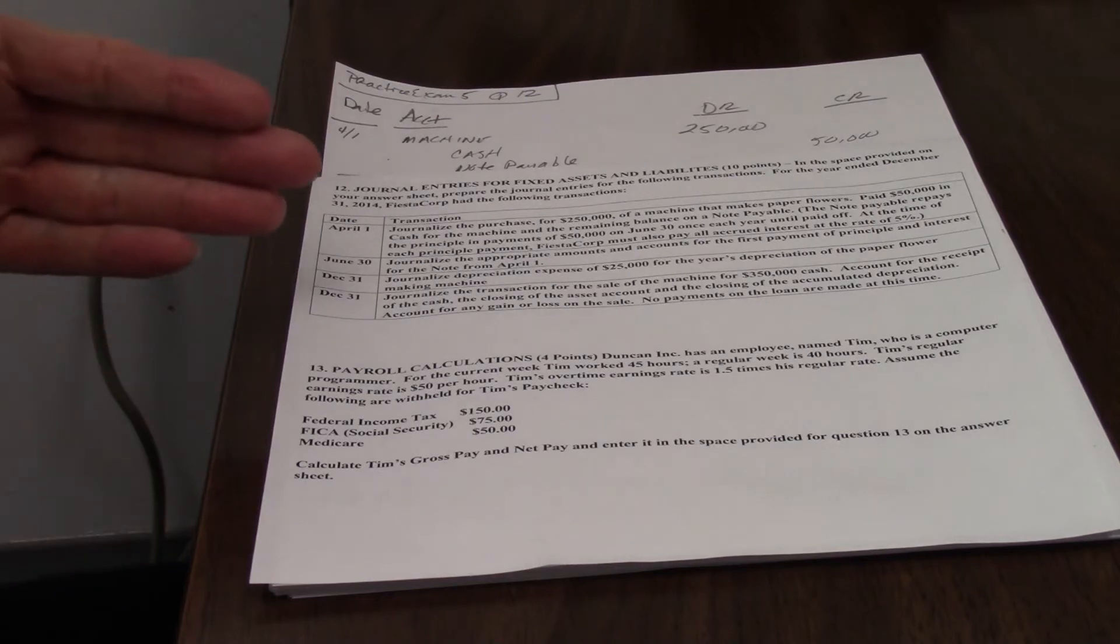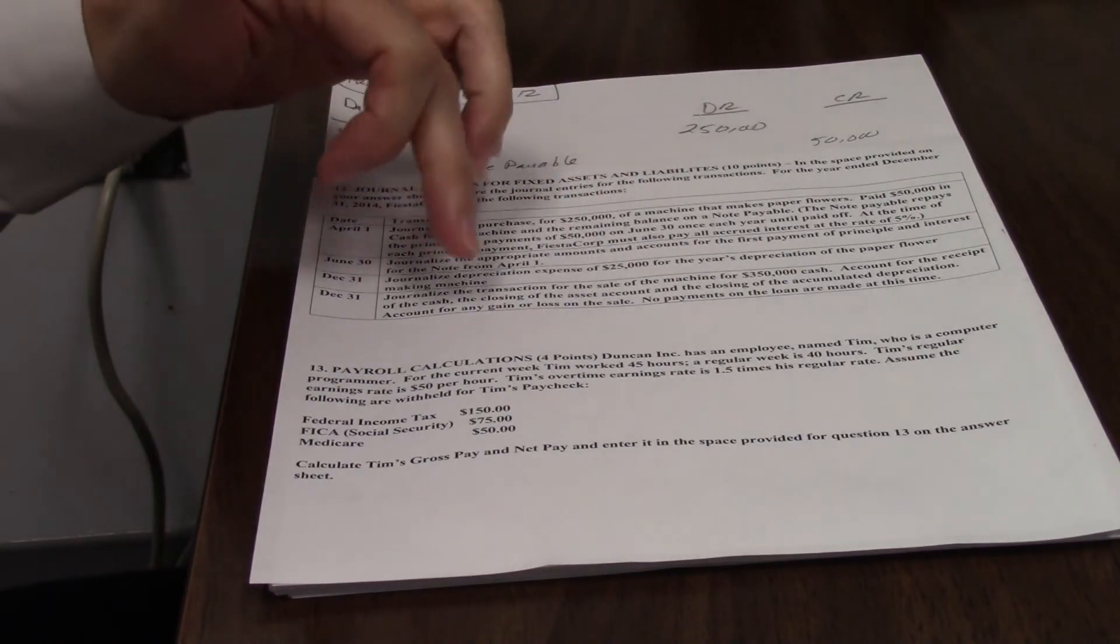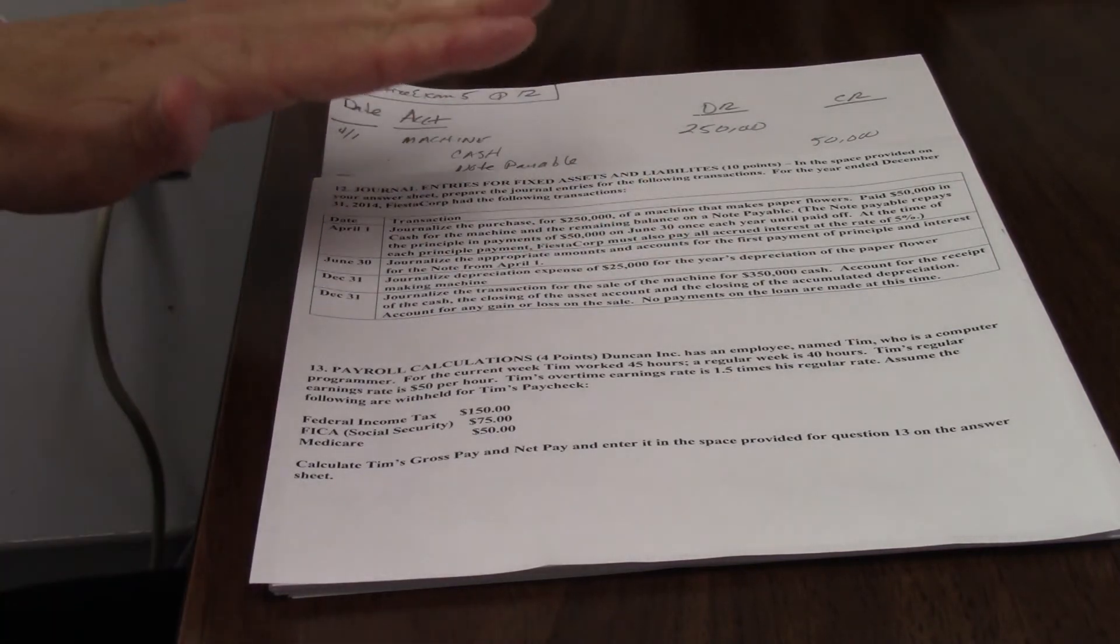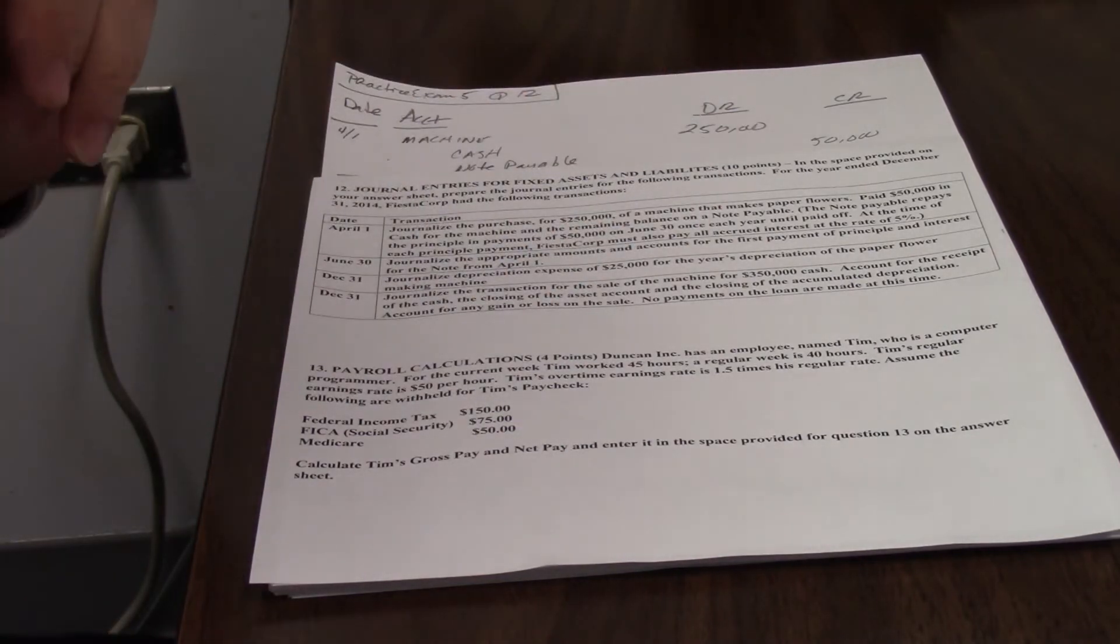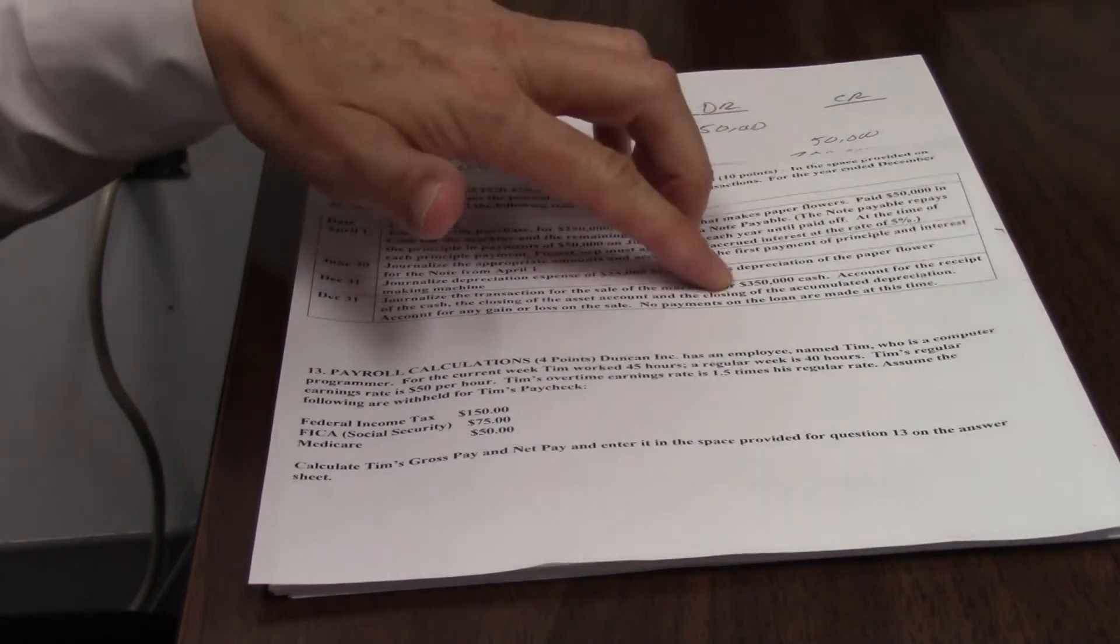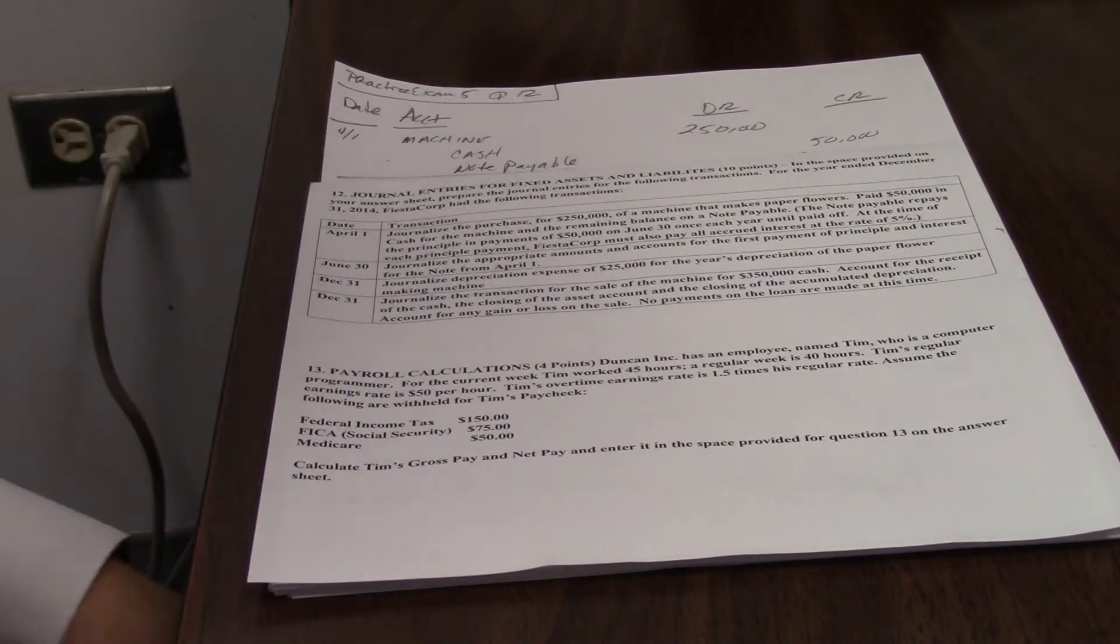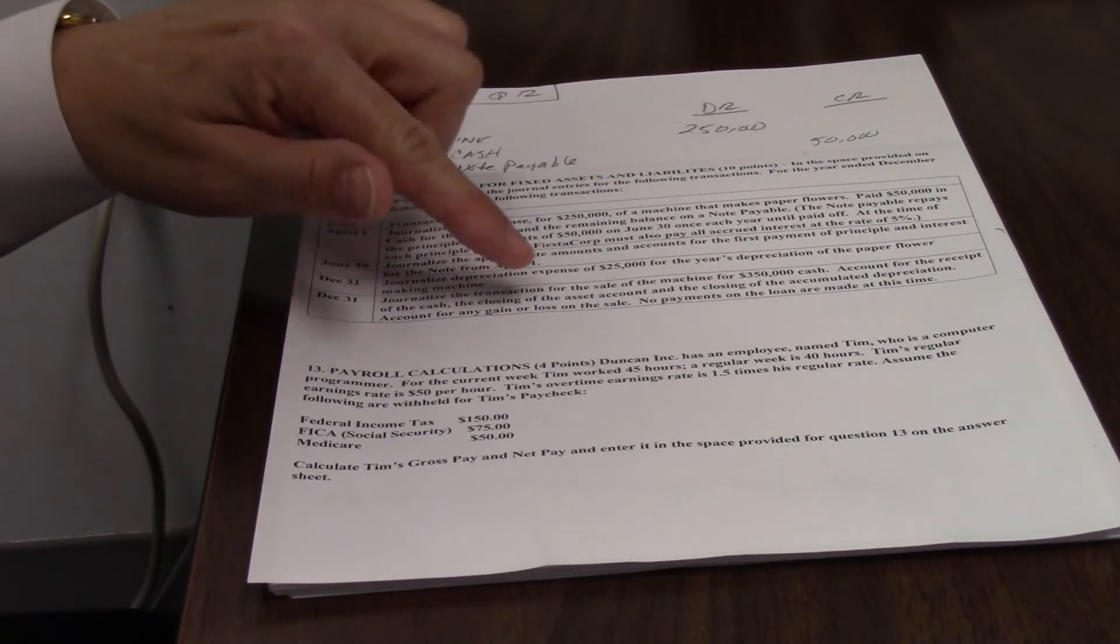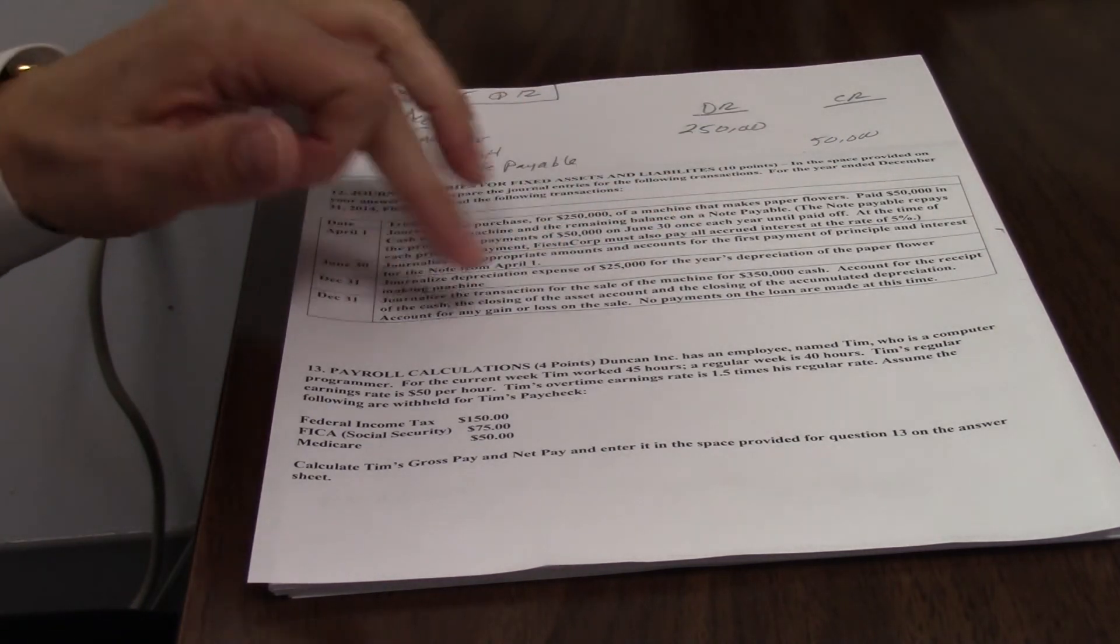So the final transaction, we sell the machine for $350,000. Account for the receipt of the cash, the closing of the asset, and the closing of the depreciation, account for any gain or loss. No payments on the loan are made at this time. So we don't really owe anything on the loan until next June. We will pay it off with the cash, but we're not going to worry about that.